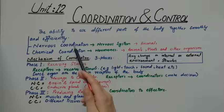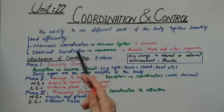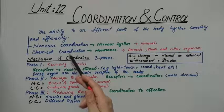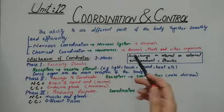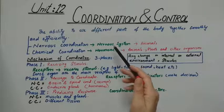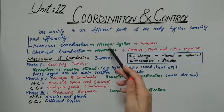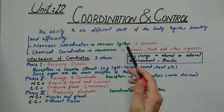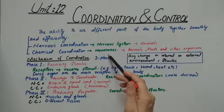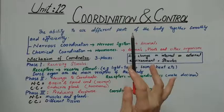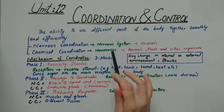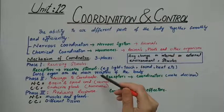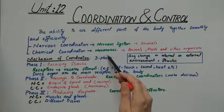Coordination is divided into two types. One is nervous coordination — in which the nervous system is involved — and the other is chemical coordination, in which a special set of chemicals known as hormones are involved.